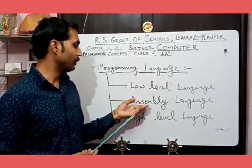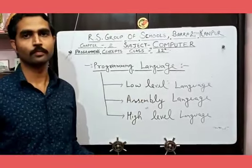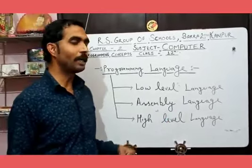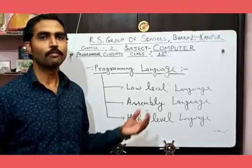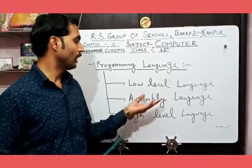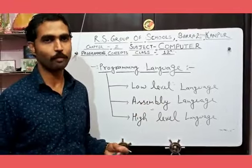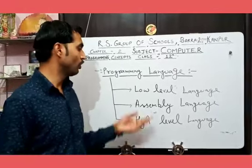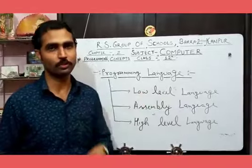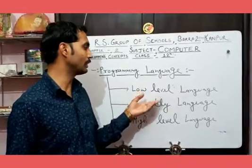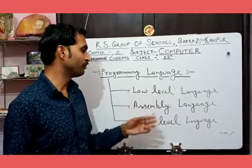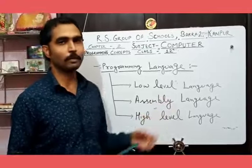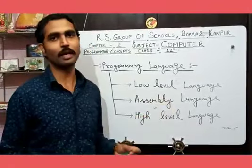Now we will study about Assembly Language. Assembly Language allows a user to write a code in an alphanumeric code. This language is the easiest language among our three languages. It is easy to write in an alphanumeric code. For example, if we want to add two numbers, we can write an add code.